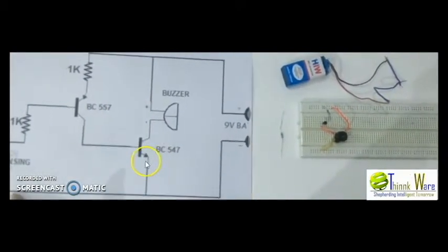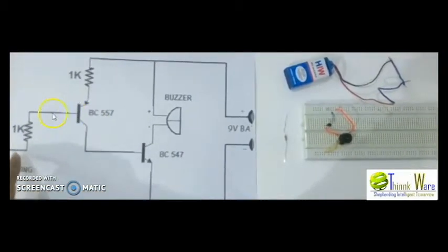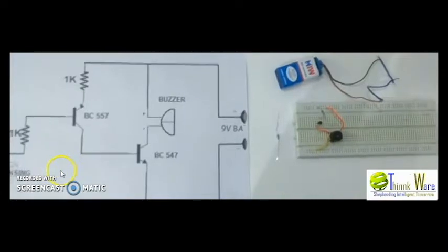One end of the emitter of BC547 is the rain sensing end, and the base of BC557 is connected through a resistor as the rain sensing end.